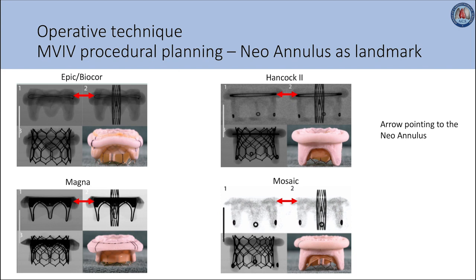Let's discuss the Mosaic valve shown in the lower right panel. As you may notice, unlike the other valves, the sewing ring is not accompanied by a clear fluoroscopic landmark. Similarly, the sewing ring marker in the Epic or Biocore valve in the upper left panel may be extremely hard to visualize under fluoroscopy in obese patients or patients with COPD.